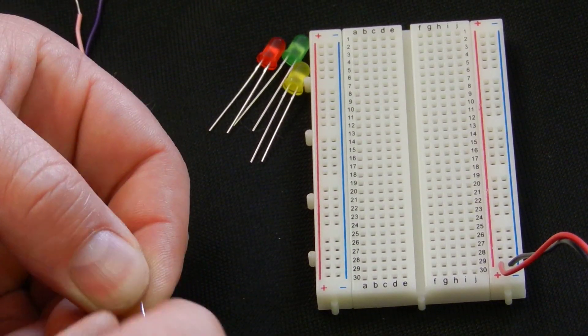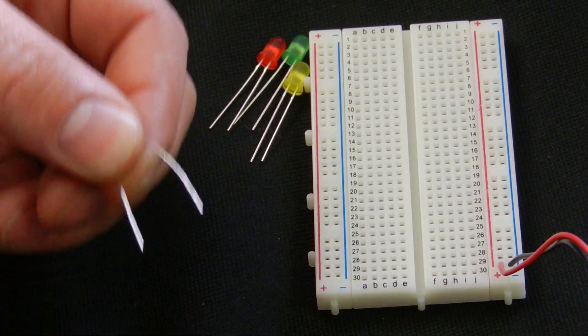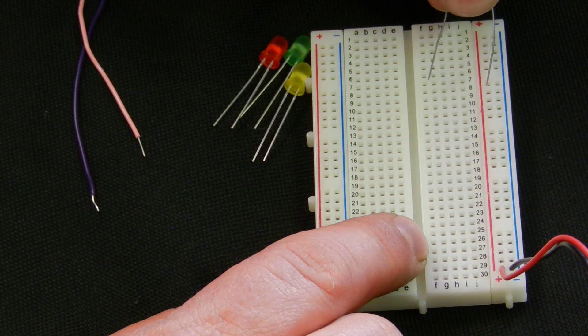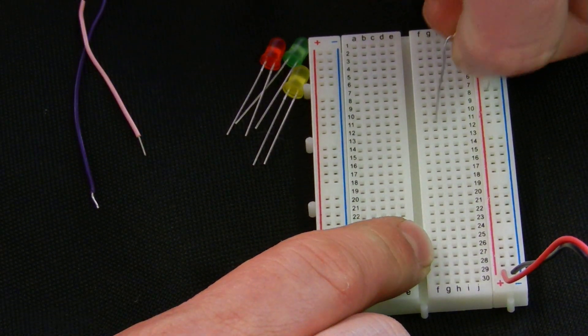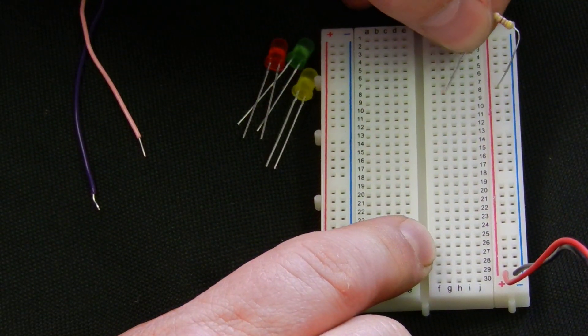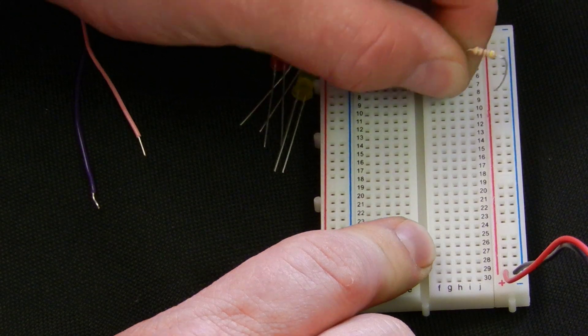What I am going to do is make a simple LED circuit and I am going to take from the red, the positive, just into one of the rows.